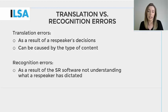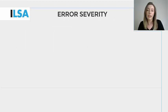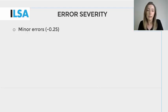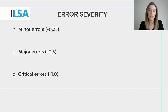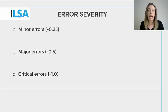Many examples of recognition errors were given in Module 2A in the video lecture on advanced intralingual re-speaking. You may want to refer back to it to see some examples of recognition errors. The error coding scheme for the NTR model accounts for minor, major and critical translation and recognition errors, as opposed to the minor, standard and serious errors accounted for in the NER model. This adaptation highlights the relationship between major and minor errors and emphasises the severity of critical errors.